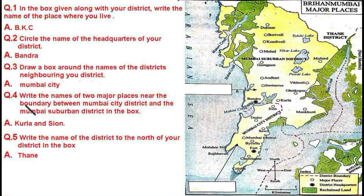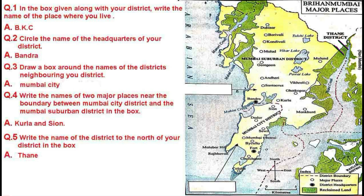Question four: write the names of two major places near the boundary between Mumbai City District and Mumbai Suburban District. The two important places are Kurla and Sion. For question five — write the name of the district to the north of your district. In the upward direction from our district, Thane District is towards the north, so we write Thane District.